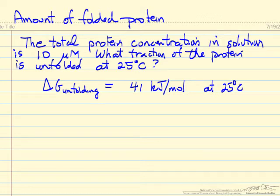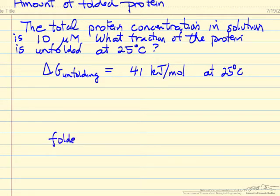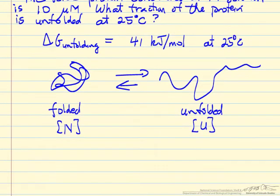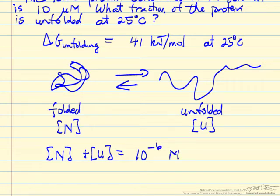We are looking at a folded version of the protein in equilibrium with an unfolded version. The question is what fraction or concentration is unfolded. We use notation where N represents the concentration of folded and U represents the concentration of unfolded. The sum of the two types is 10 micromolar, or 10 to the minus 6 molar concentration.